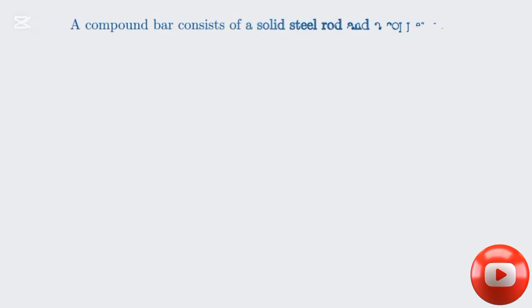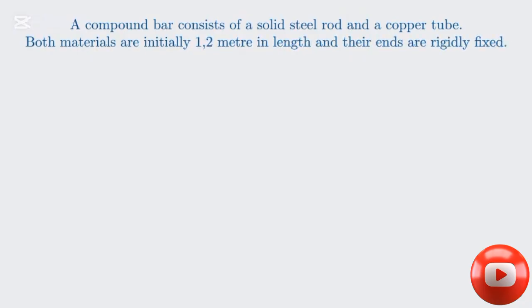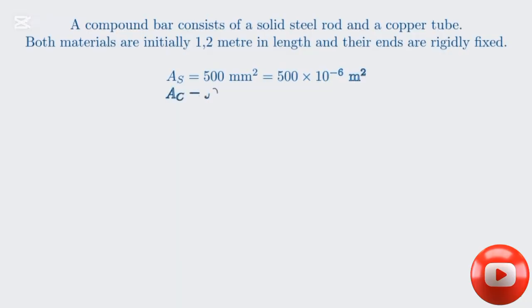We have a compound bar made of a steel rod and a copper tube. They are of the same initial length, 1.2 meters, and are rigidly fixed at their ends. This fixed condition is very important, as it will prevent the materials from expanding freely when heated, causing stress. We are given the cross-sectional area of the steel rod as 500 square millimeters, which is 500 times 10 to the minus 6 square meters. The copper tube has an area of 900 square millimeters, or 900 times 10 to the minus 6 square meters.